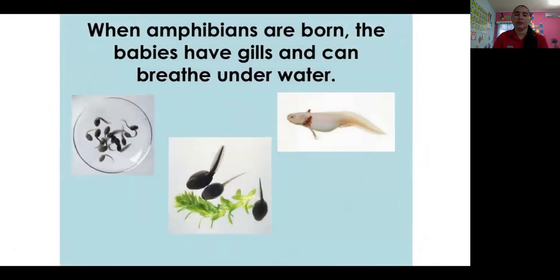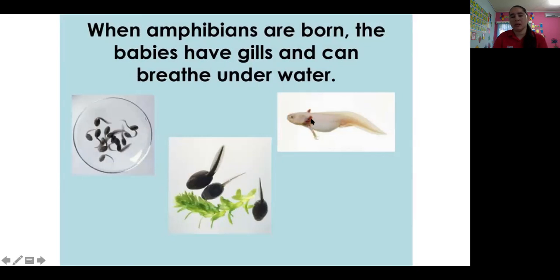When the amphibians are born, their babies have gills. Gills — that's what the fish have. This one looks like a fish. That helps them breathe. And afterward, when they keep getting bigger, then they get lungs to breathe.